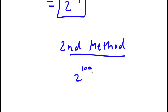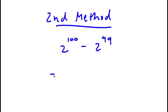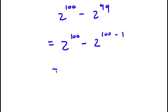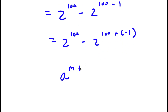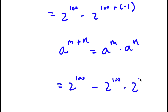I actually have a second method of solving this problem. My problem was 2 to the power of 100 minus 2 to the power of 99. This time, instead of changing 100 to 99 plus 1, I'm going to change 99 to 100 minus 1. So now I have 2 to the power of 100 minus 2 to the power of 100 minus 1. I can rewrite this as 2 to the power of 100 minus 2 to the power of 100 plus negative 1. Using the exponent rule, 2 to the power of 100 plus negative 1 equals 2 to the power of 100 times 2 to the power of negative 1.